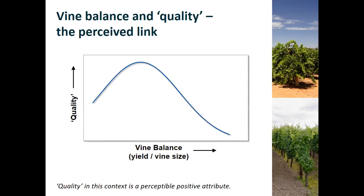The area we're wanting to address is the link between vine balance and fruit quality or fruit composition. The model figure here indicates the way people perceive that link. Where you've got a low amount of fruit for the canopy size, you might get fruit that is too ripe or difficult to harvest before it gets overripe, giving a degradation in quality. Conversely, where we've got a high amount of crop per unit of canopy size, we might struggle to get the characteristics we want. So it's somewhere in the middle that we think we get the best fruit quality.